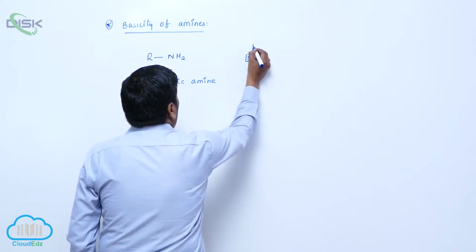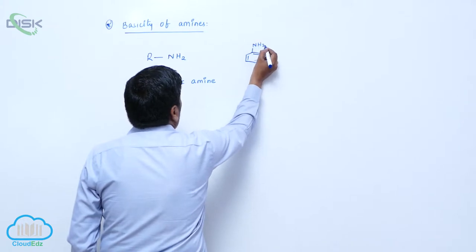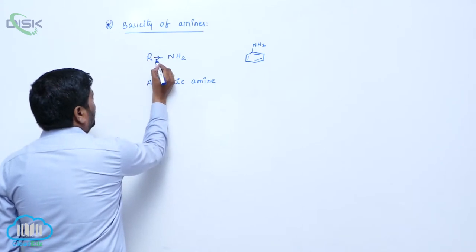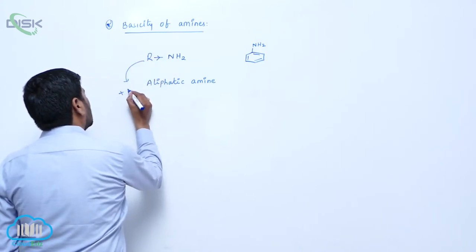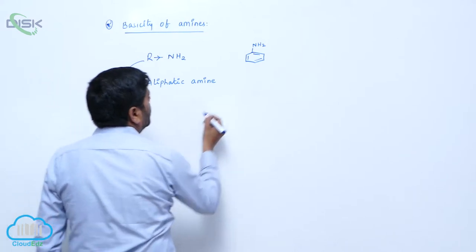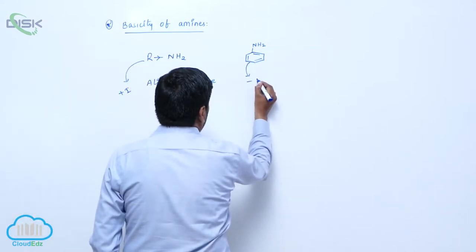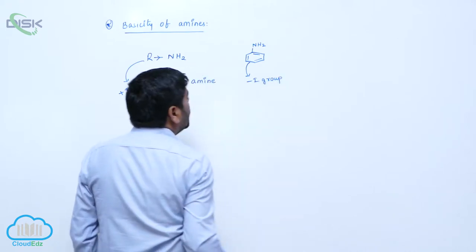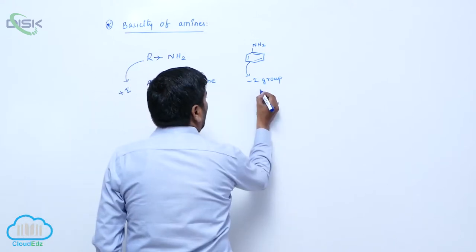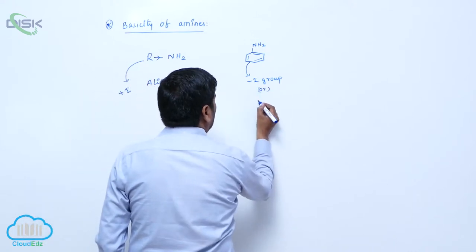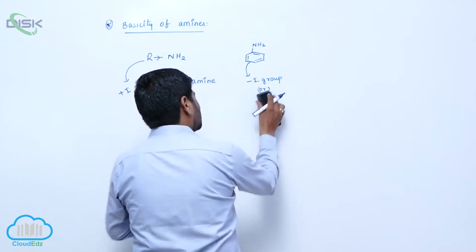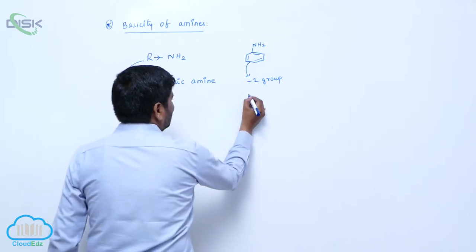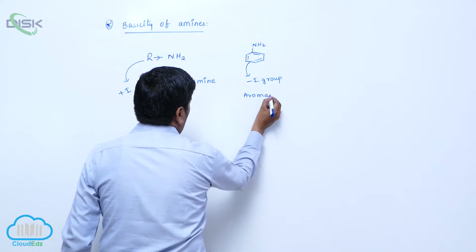Which one is it? Aromatic amines. Now, here the alkyl group is a plus I group. The phenyl group can act as minus I group. R or phenyl, it is a minus I group. So, therefore, this is aromatic amine.